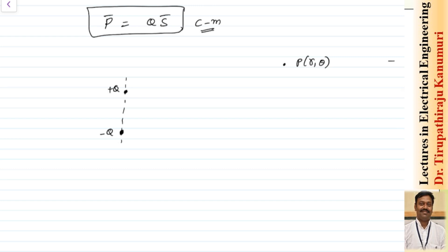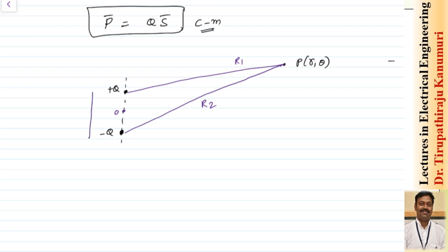Let us assume this distance from the positive charge to point P is equal to R1. Similarly, the second charge is making a distance of R2 with respect to the center. One charge is at some distance on the positive Z axis and the other is on the negative Z axis. This gap is equal to L. Let us assume the angle subtended here is theta 1, and the angle subtended here is theta 2. From the center, I am drawing one line pointing towards this point, and the radius of this line is equal to R.